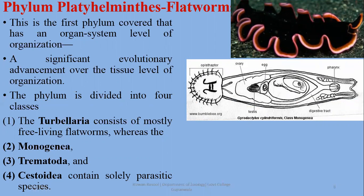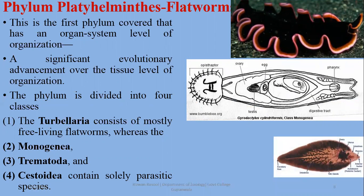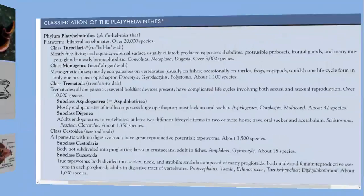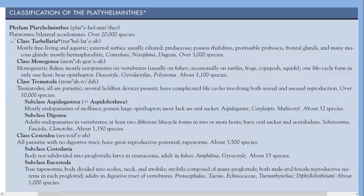In the classification of Platyhelminthes: Class Turbellaria includes genera such as Convuleta, Notoplana, and Lygistia, with around 3,000 species. Class Monogenea has approximately 1,100 species. Class Trematoda has about 10,000 species and is further divided into two subclasses: Aspidogastria and Digenea. Class Cestoda contains the true tapeworms.